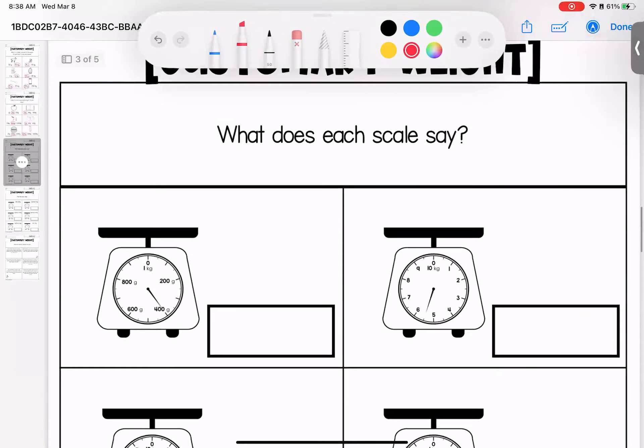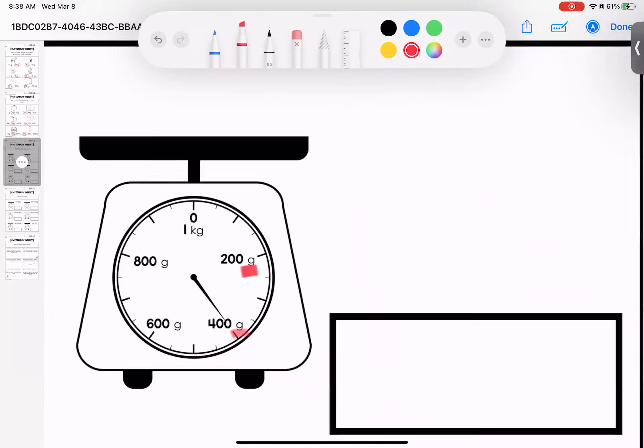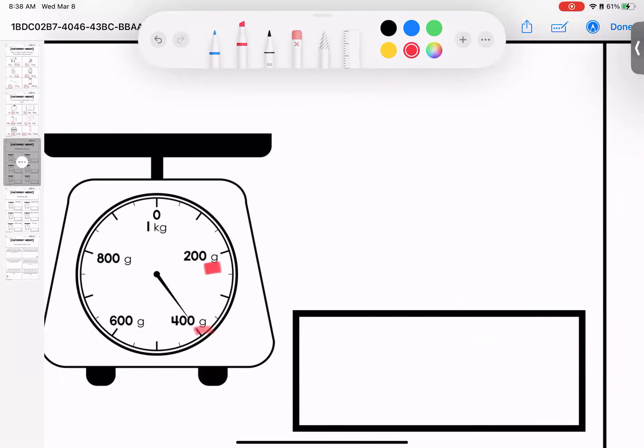All right, nuggets, we are practicing reading our scales. Remember to double check and see what is being measured. This scale is showing me grams. So when I read this, this scale is showing me 400 grams. We want to put our labels. Labels are important so everyone knows what we're talking about.